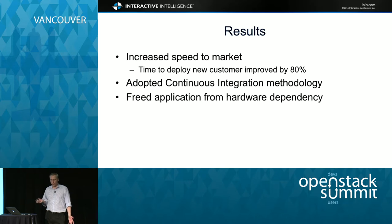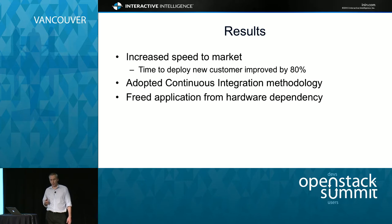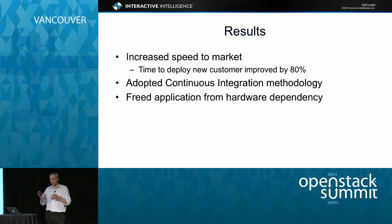So what are the results we've gotten so far? Yes, we increased speed to market — deployment of new customers has increased significantly. We were also able to adopt a continuous integration model, which helps us with stability and provides a more controlled way of rolling out new functionality. One part worth mentioning is there is a cultural change in the company when you do something like this, and that's still going on — we're still working through it.